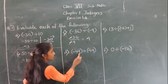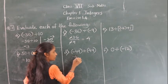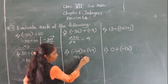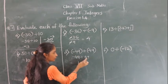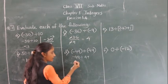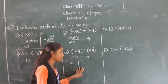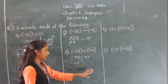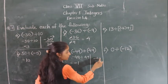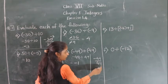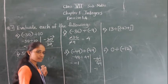Part (d): minus 49 divided by 49. Divide them as whole numbers — 49 ones are 49 — and put a minus sign before the answer. So minus 49 divided by 49 equals minus 1.